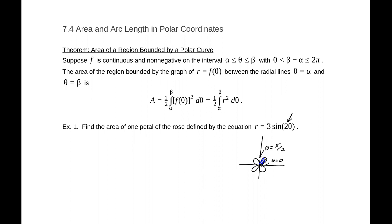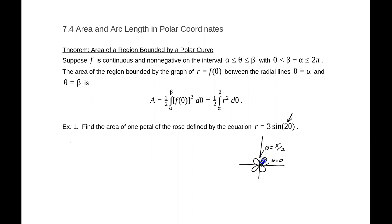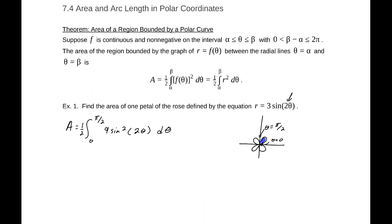So the area we're actually trying to find, if I had that function which is a rose with 4 leaves, I want to find the area of this one leaf. Well, this leaf begins at θ = 0 and it ends at θ = π/2. So according to that theorem, the area equals the integral, one half the integral from 0 to π/2 of r squared, which is going to be 9sin²(2θ) dθ.